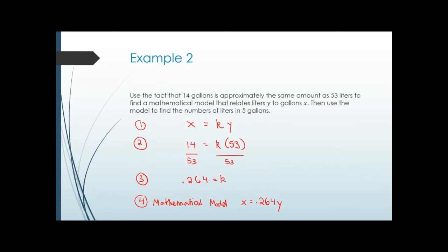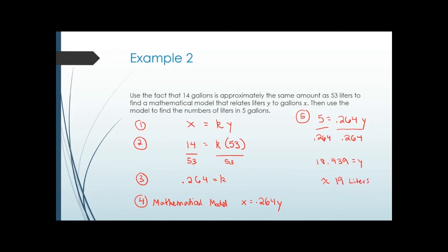Step five, using the model: find the liters in 5 gallons. Since x is gallons, plug in 5: 5 equals 2.264y. Divide both sides by 2.264, and this comes out to approximately 18.939, so about 19 liters. The problem is now finished.